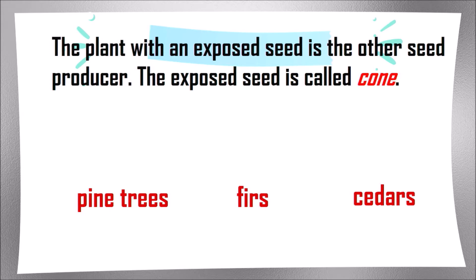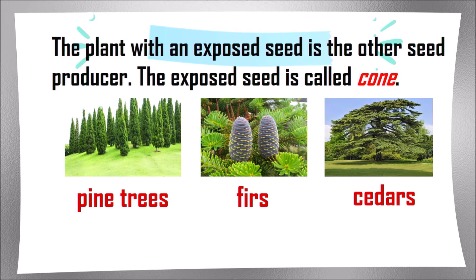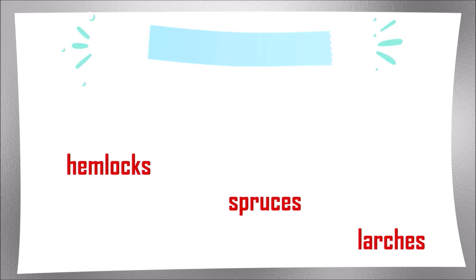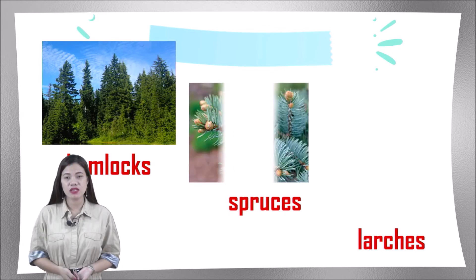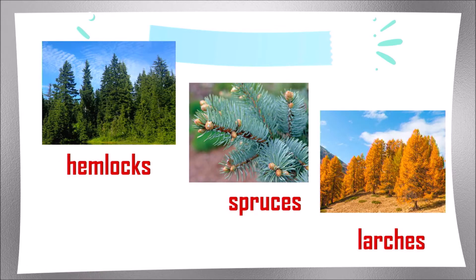Next, the plant with an exposed seed is the other seed producer. The exposed seed is called a cone. Examples are pine trees, firs, and cedars, and also hemlocks, spruces, and larches. These kinds of plants are called conifers. They either have needle-shaped leaves or scale-like leaves.